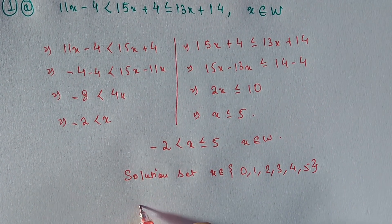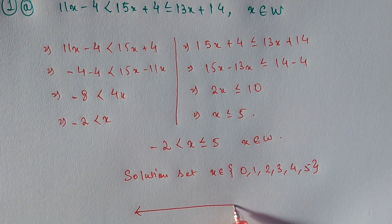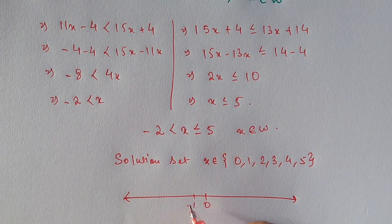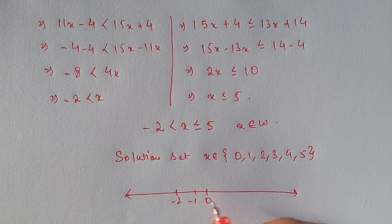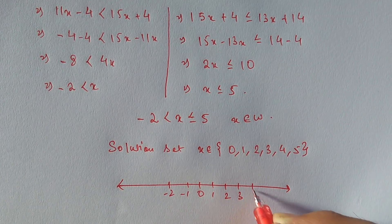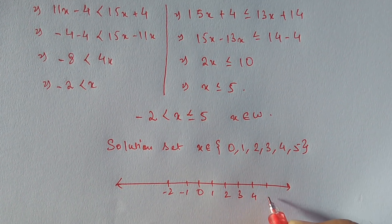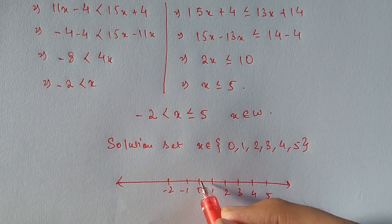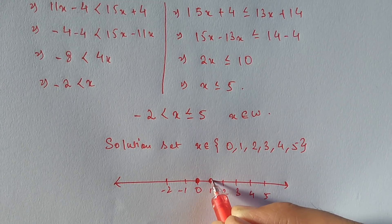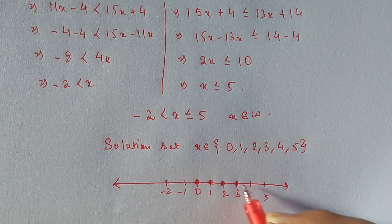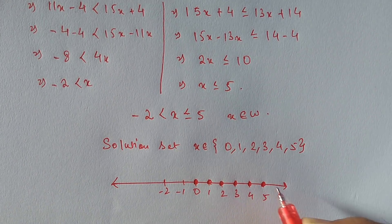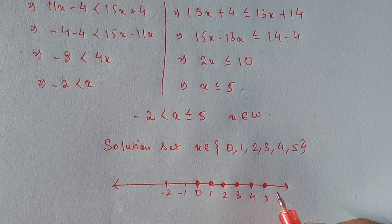The number line for whole numbers shows: 0, minus 1, minus 2, 1, 2, 3, 4, 5. We make filled circles on 0, 1, 2, 3, 4, and 5 to represent the solution set. This is your answer.